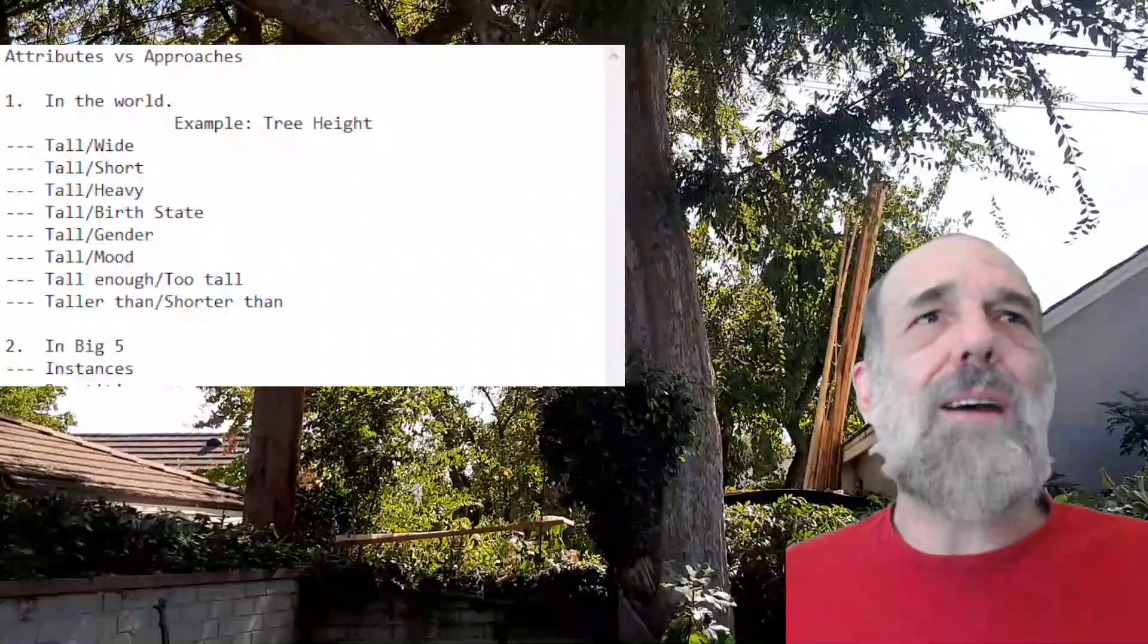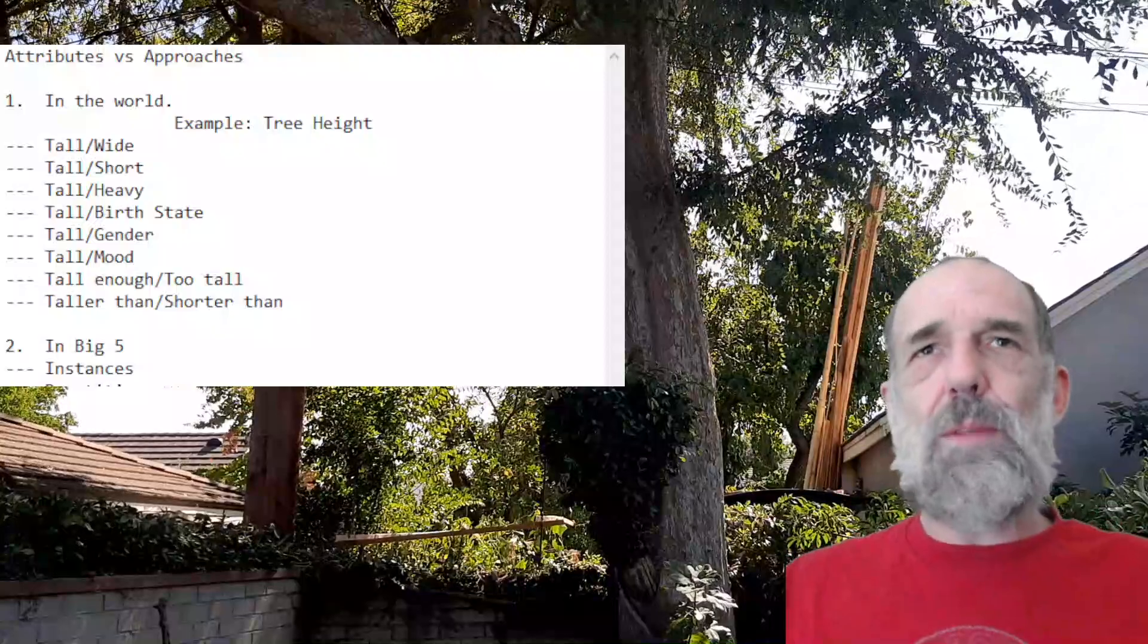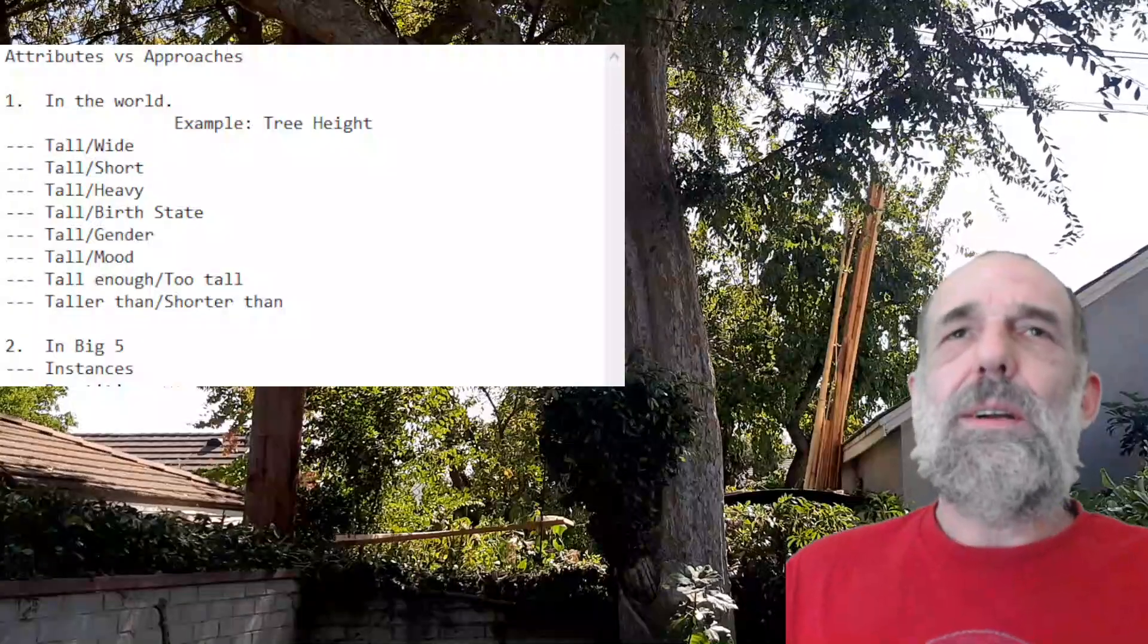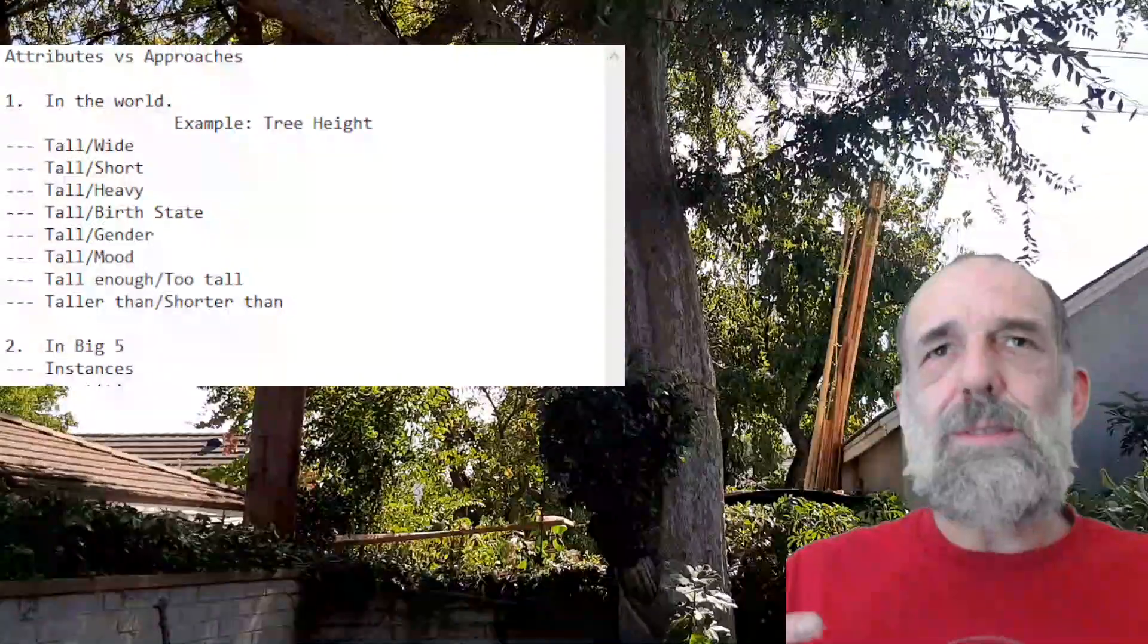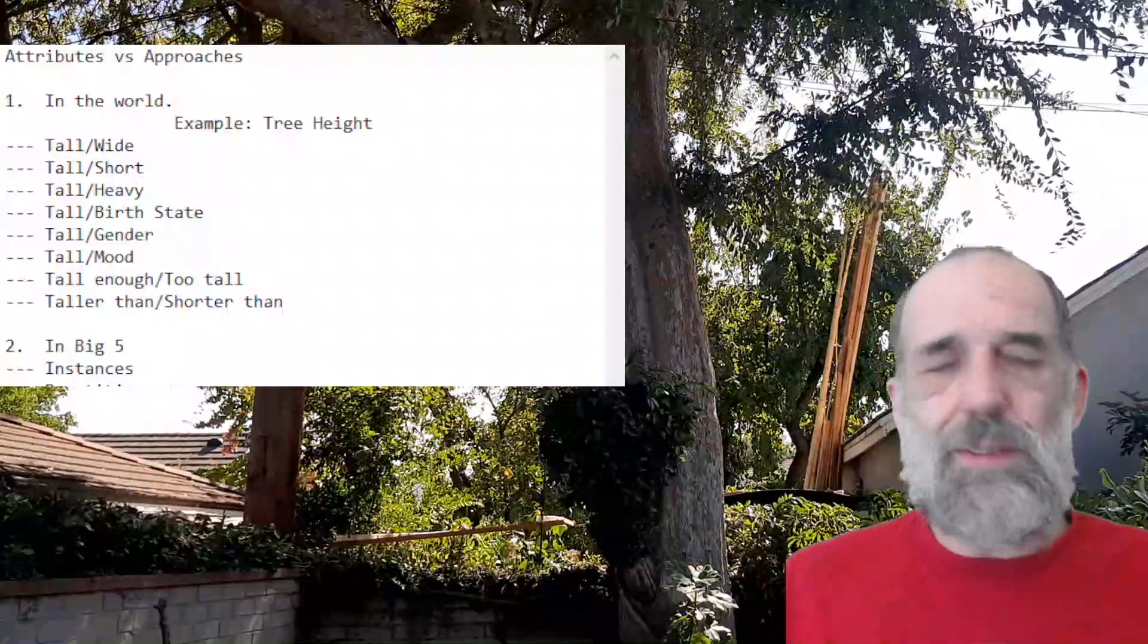Now, in Big Five, we have to first begin before exploring Big Five, note that the Big Five is called ocean, which measures your openness, your conscientiousness, your extroversion, your agreeableness, and your neuroticism.